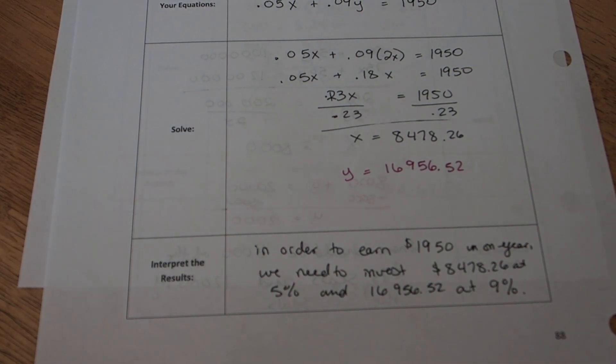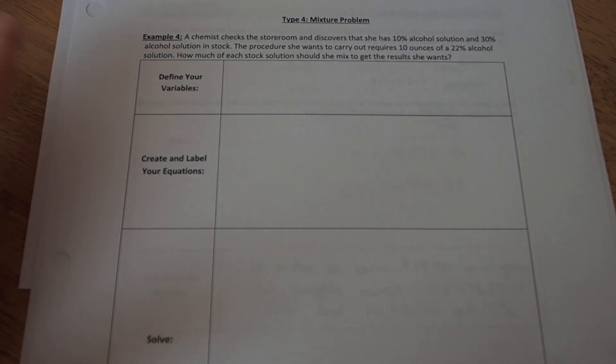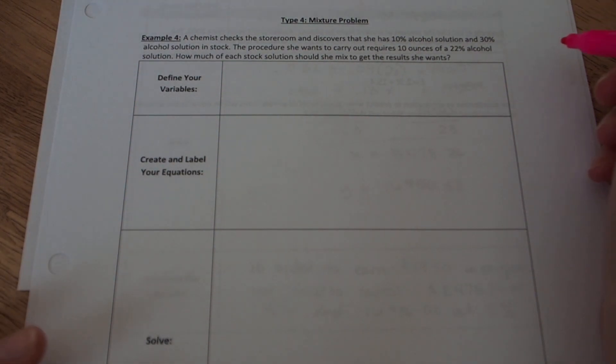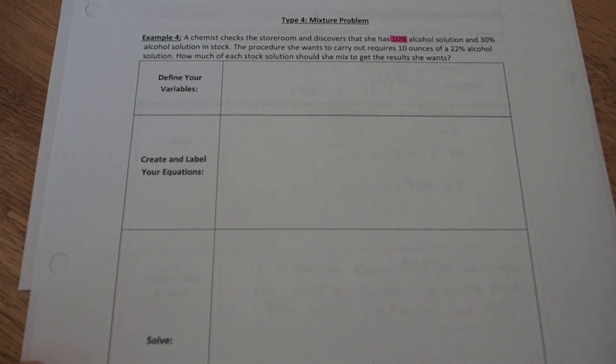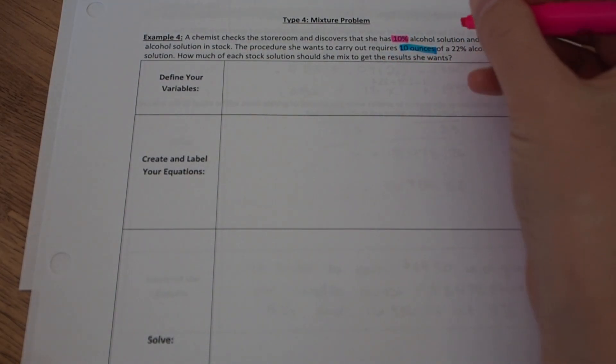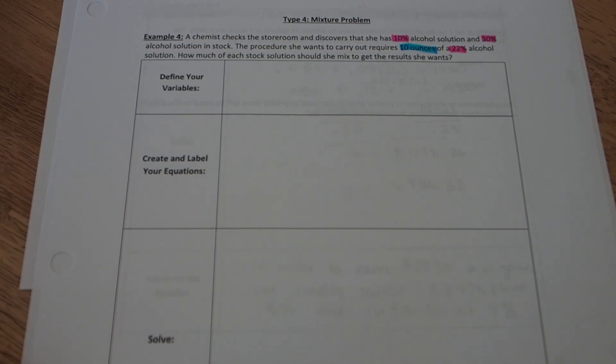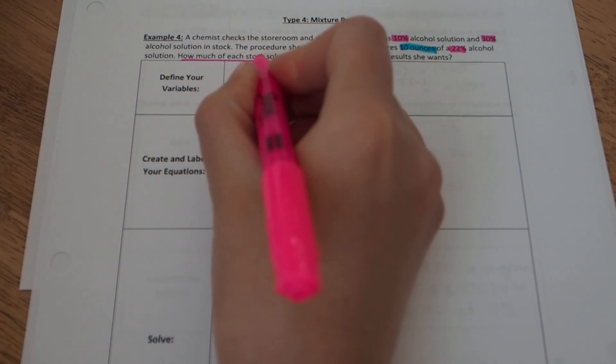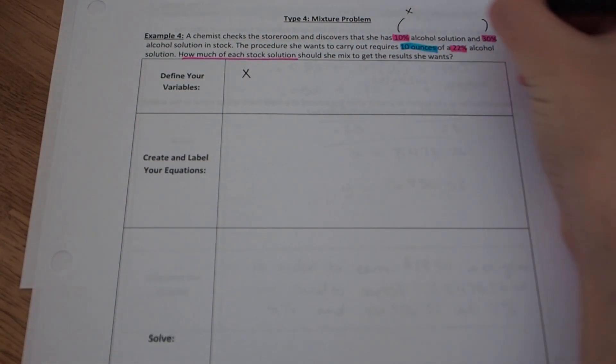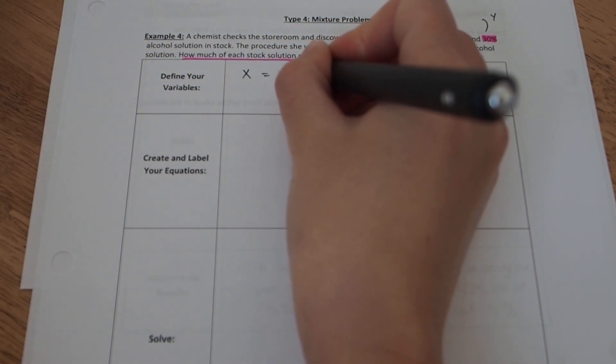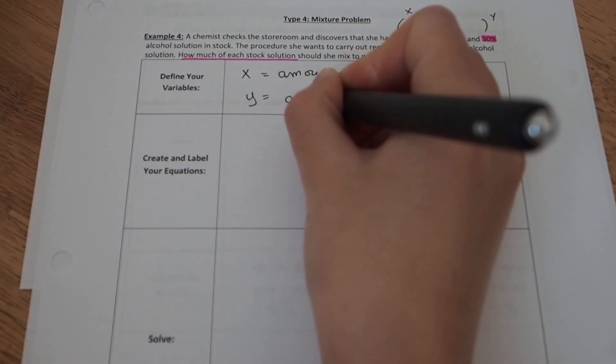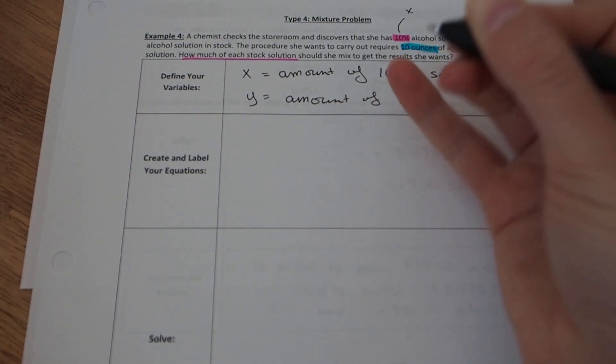There's one more example in part A, and this is our mixture problem. The mixture problem is very similar to the interest problem because it also involves percentages. Could be about a pharmacy. This one's about a chemist. This chemist checks the store room and discovers that she has a 10% alcohol solution and a 30% alcohol solution in stock. But the procedure that she wants to do requires 10 ounces of a 22% alcohol solution. How much of each stock solution should she mix to get the desired results? How much of each stock solution are going to indicate the variables for me. The two stock solutions are the 10% and the 30%. So we're going to say x is going to be the amount of 10% solution. And y is going to be the amount of 30% solution.